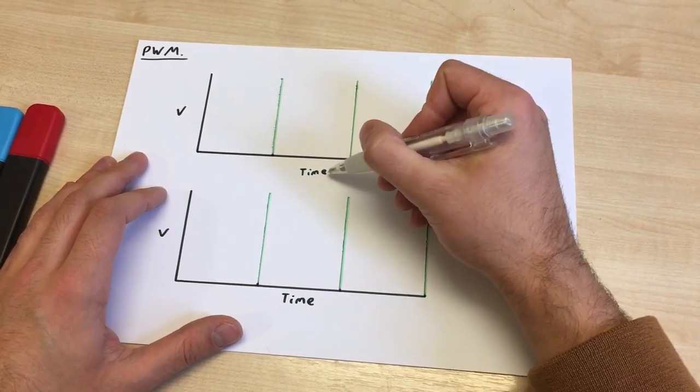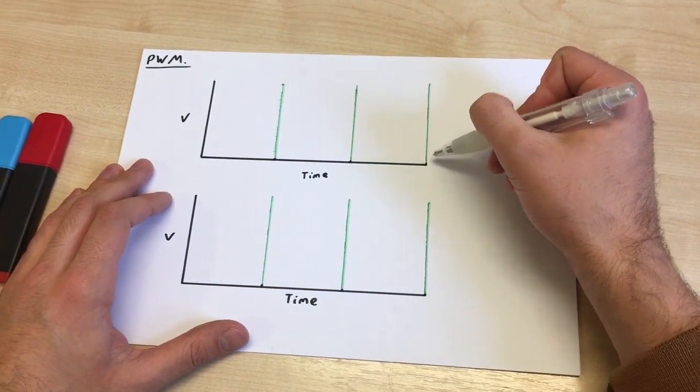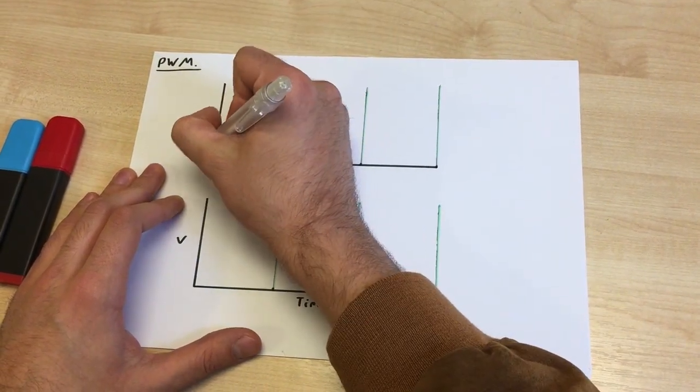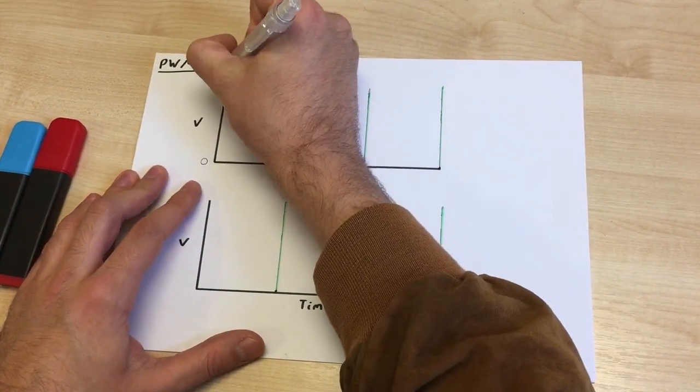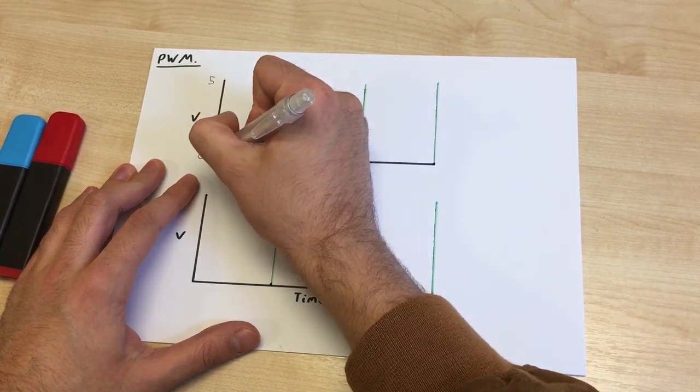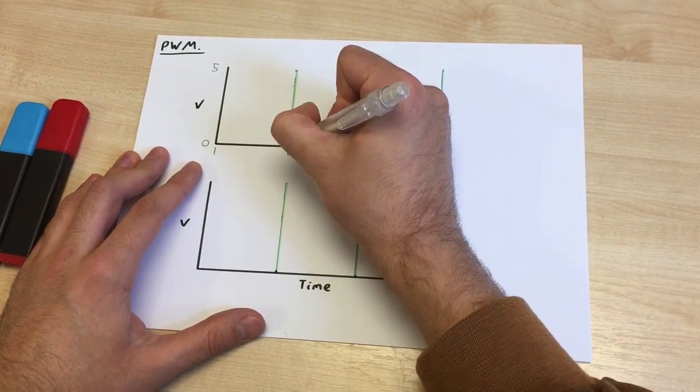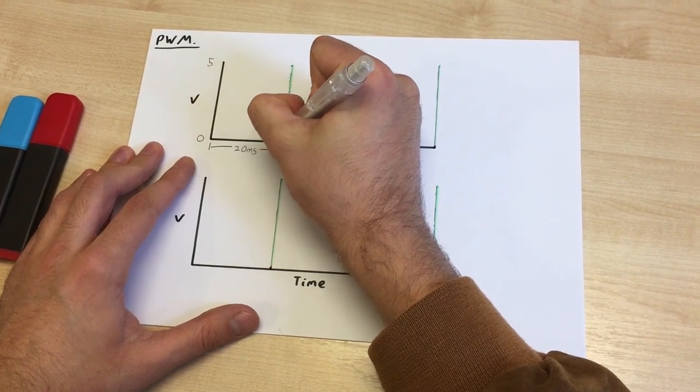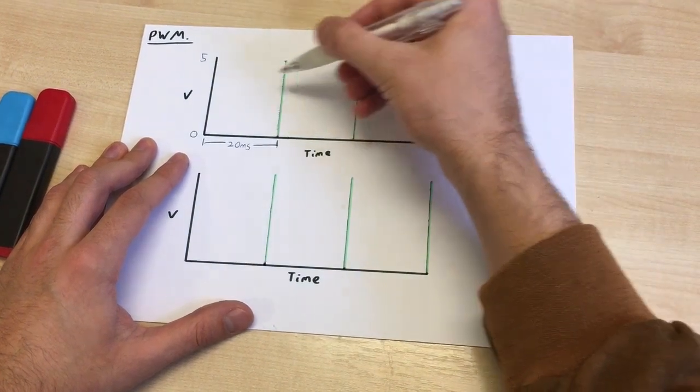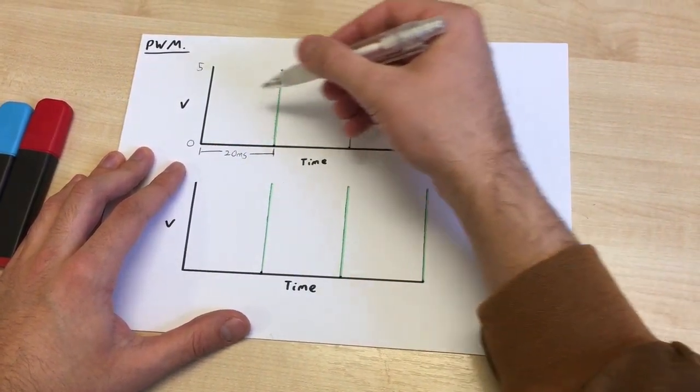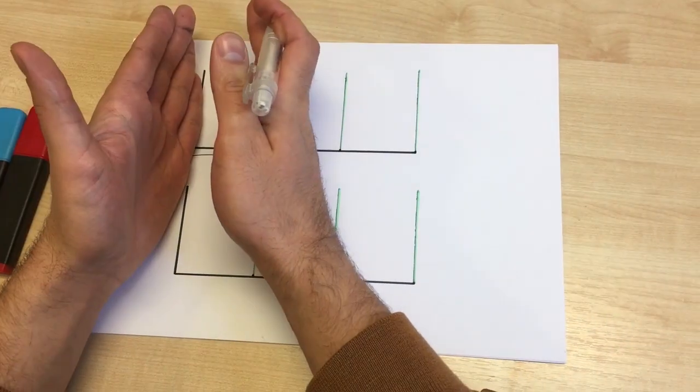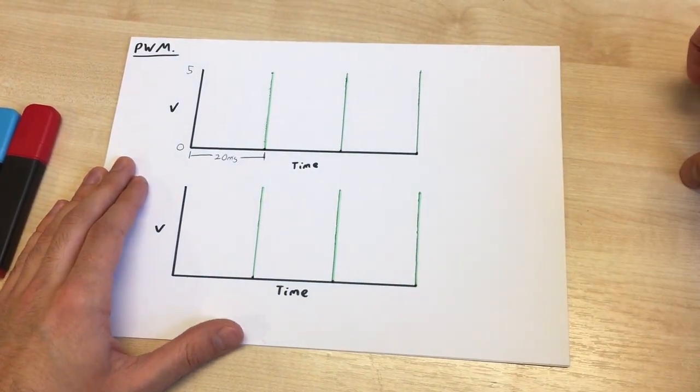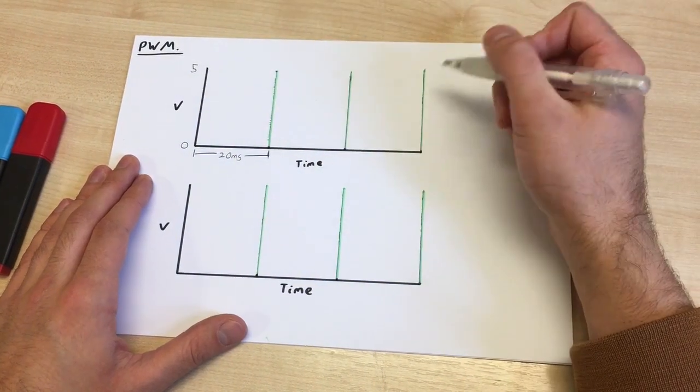So to help explain pulse width modulation, I've drawn these graphs. So we've got time on the bottom axis, and voltage above on the y-axis. So down here, we've got 0 volts. Up here, we've got 5 volts. And each of these sections here count for about 20 milliseconds. And the reason I've divided them up is because they are sections of a wave, so that's one wave cycle, that's the second wave cycle, that's the third wave cycle, and that continues throughout the pulse width modulation. But I'll explain that in a minute.